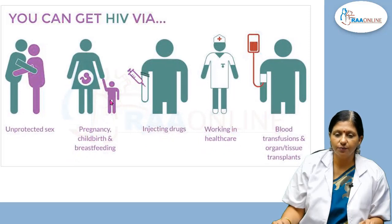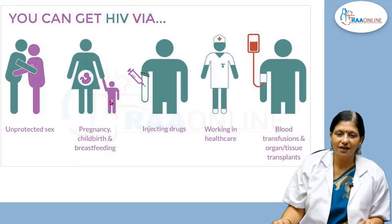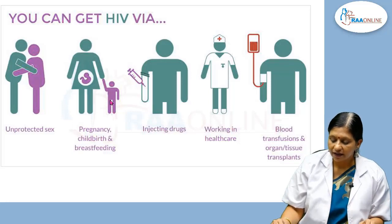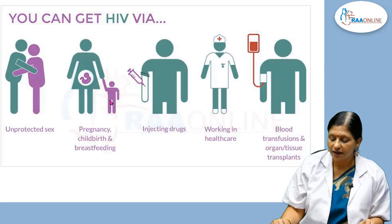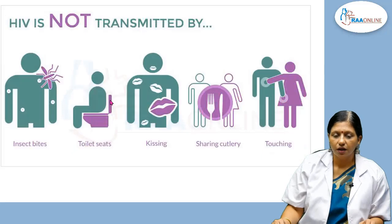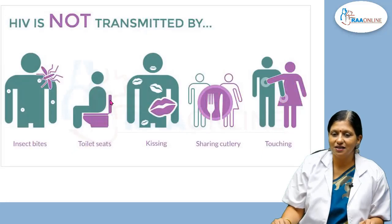Pregnancy, childbirth, and breastfeeding are times when someone can contract HIV, and today we will discuss how to do PTCT — parent to child transmission prevention. We should realize that HIV is not transmitted by insect biting, toilet seats, kissing, sharing cutlery, or touching.